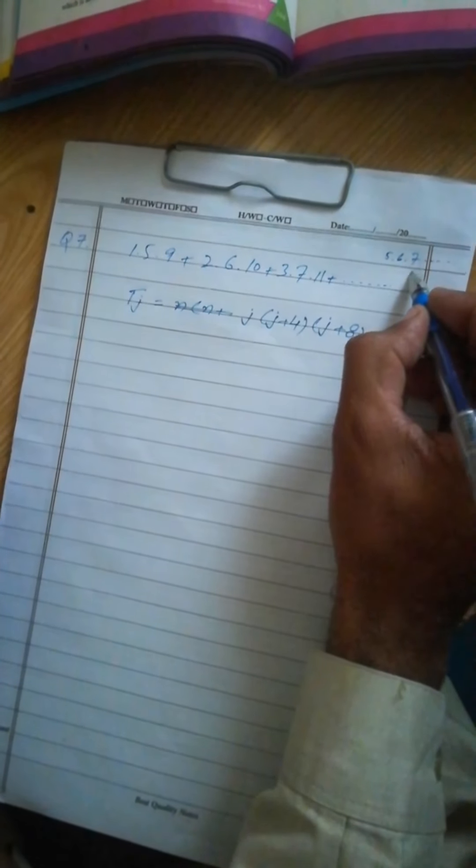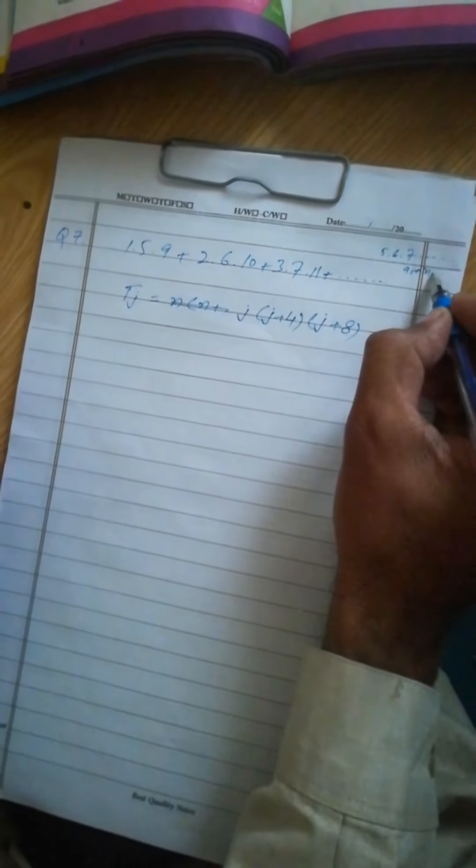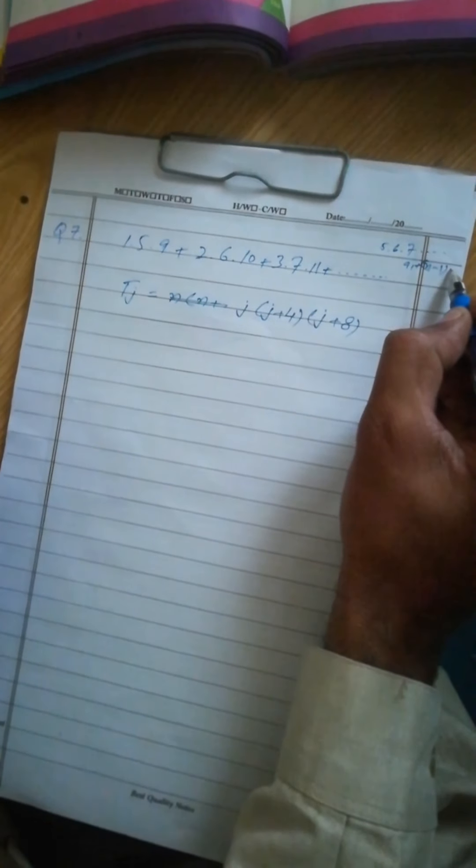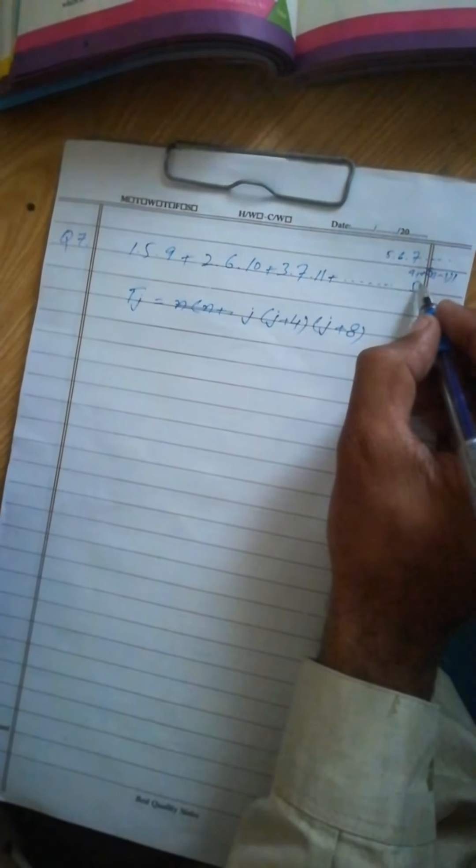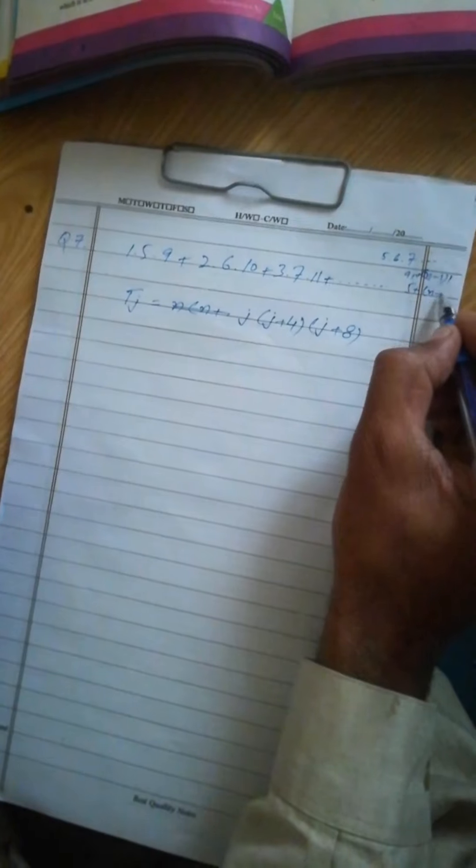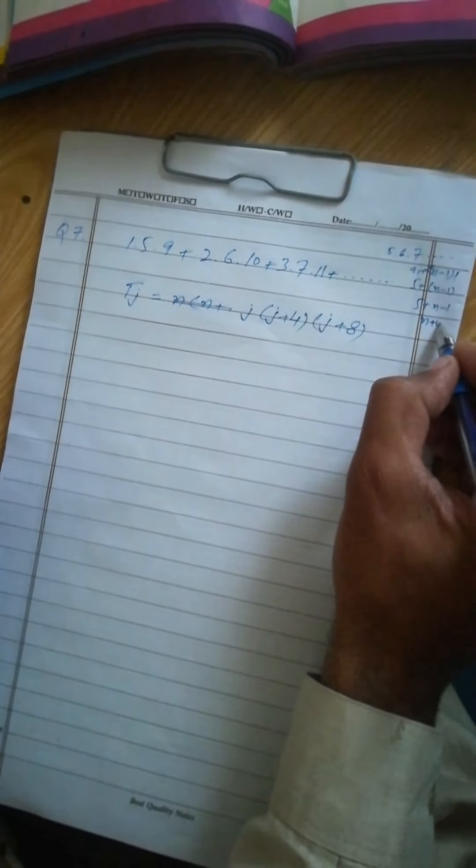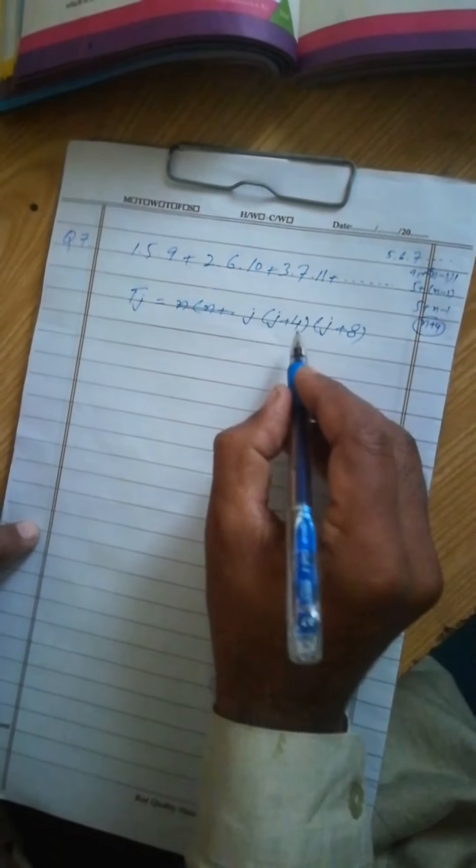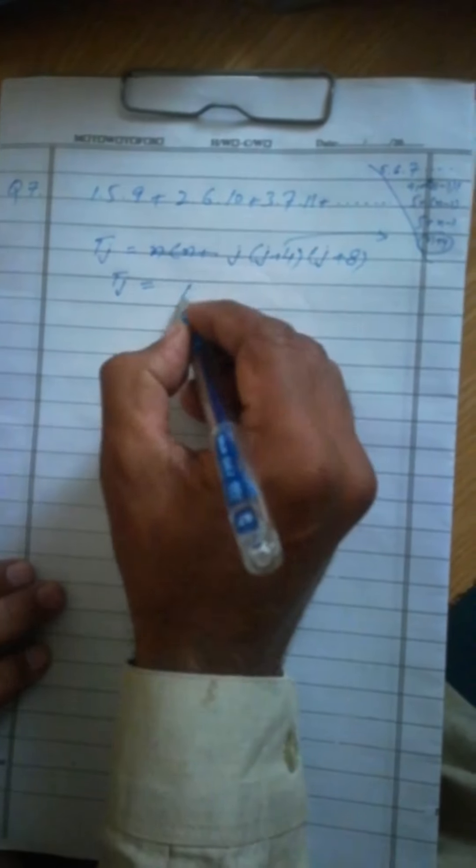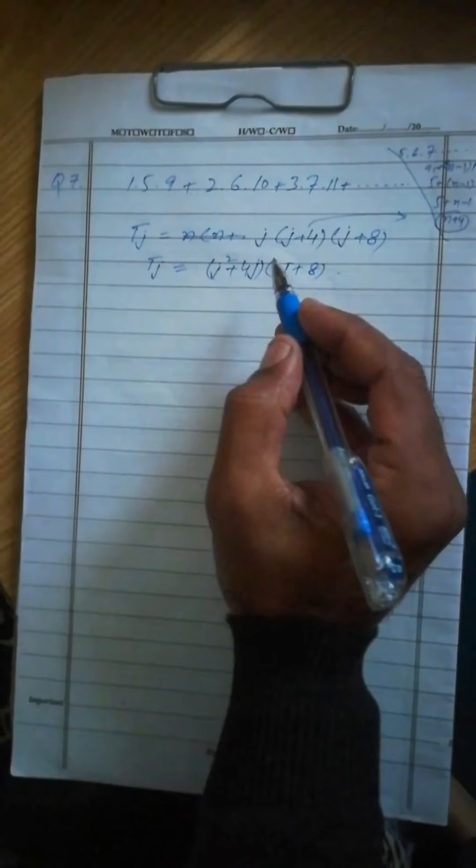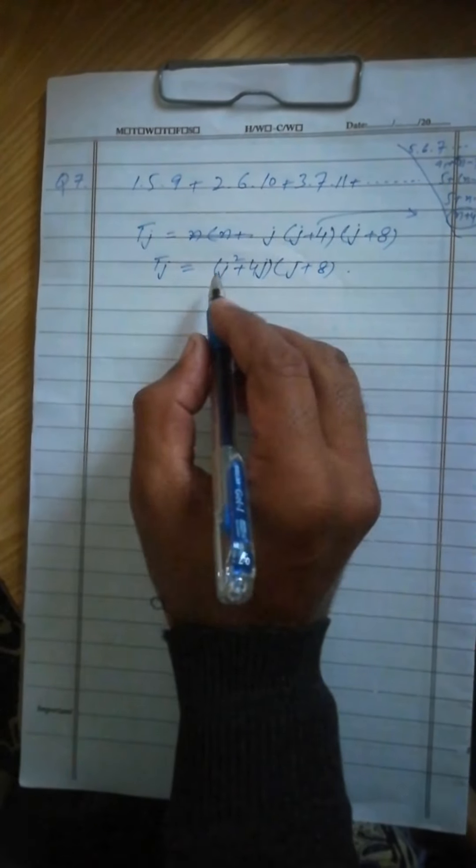5 + (n-1)... 5 + n - 1. So this is equal to n+4. This is the general term. Just multiply it now. So j² × (j+4) × (j+8).